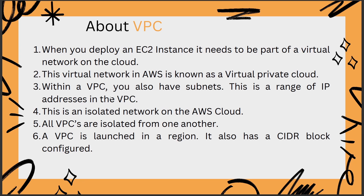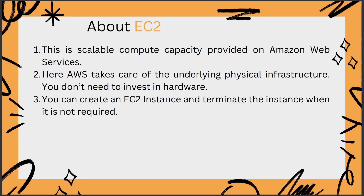A VPC also has a CIDR block configured. Moving on to the next service, the EC2 instance — this is scalable compute capacity provided by AWS. AWS takes care of the underlying physical infrastructure, which means you do not need to invest in any hardware. You can create an EC2 instance and terminate it when you no longer need it.